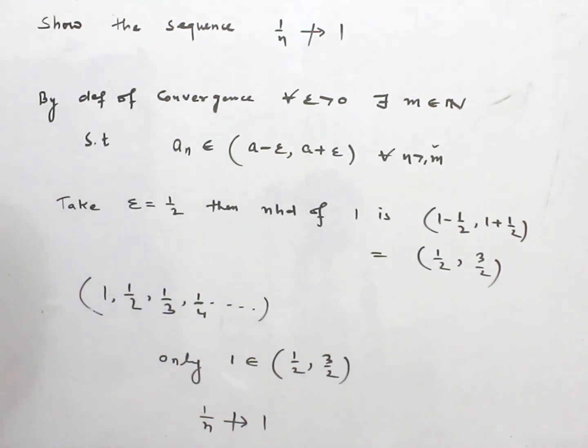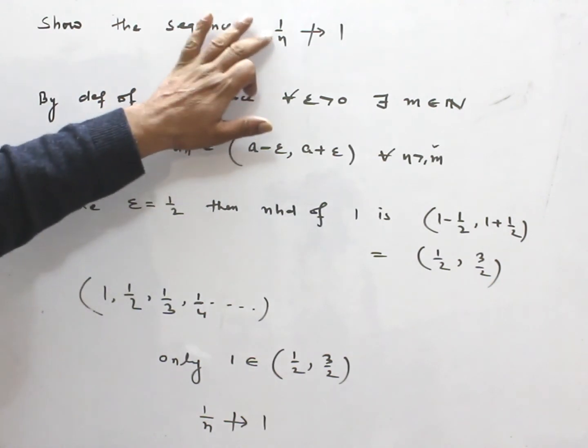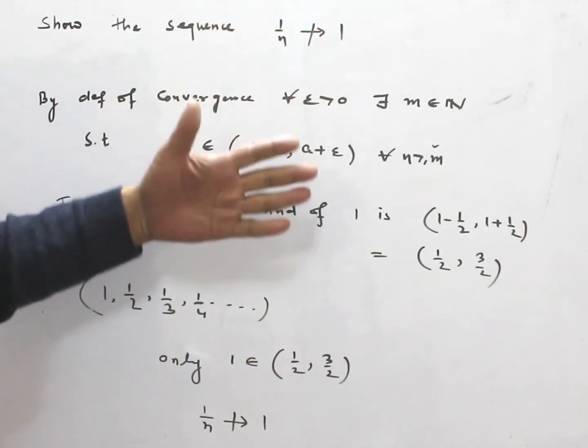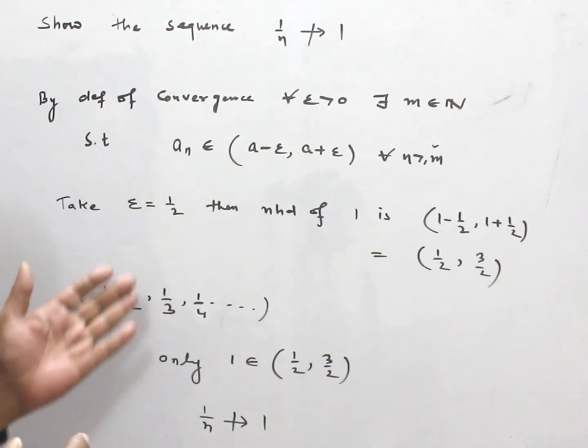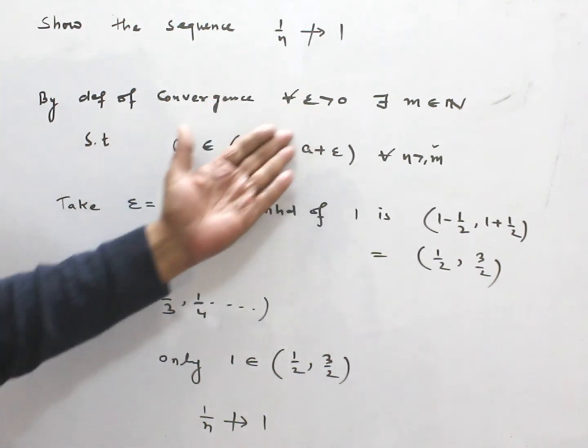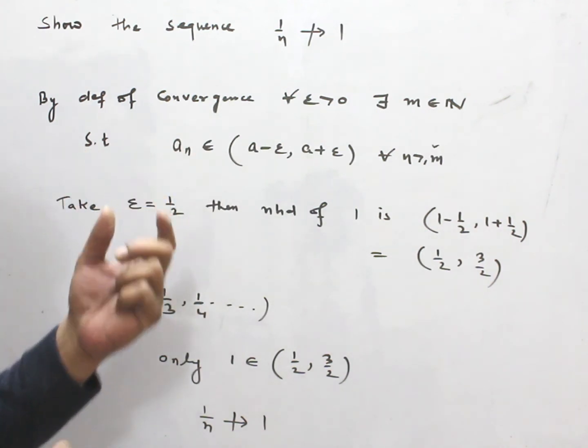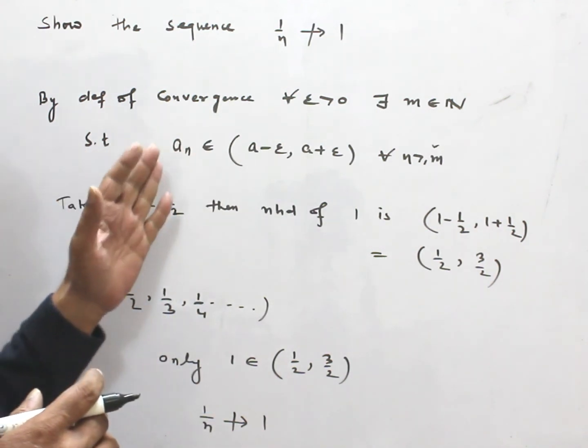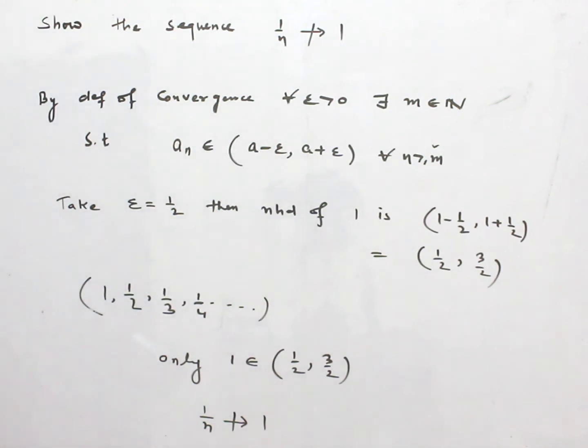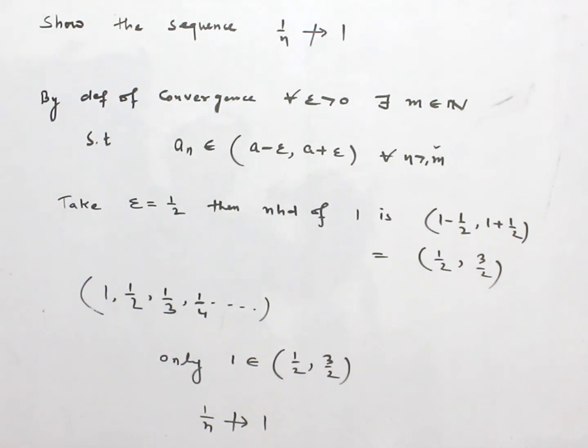Same argument, you can say this sequence will not converge to 1/2 or 1/3. Because, as we can choose epsilon such that only finite number of terms fall in the neighborhood. So, this is how we can.